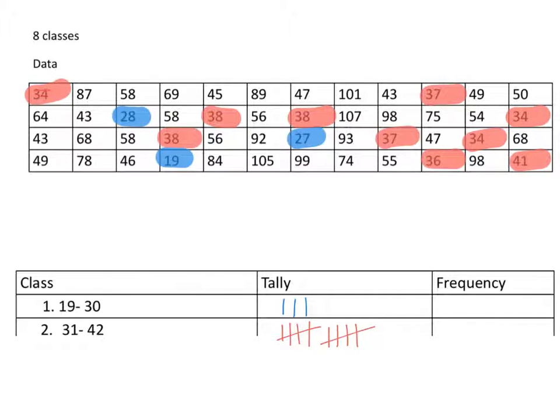Now when I get to frequency, it's just adding those tally marks up. So, for class one, your frequency is 3. For class two, your frequency is 10. This is what you should have on your chart and you just continue with the rest of your data until you get your chart filled out.